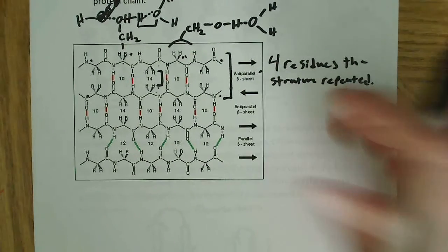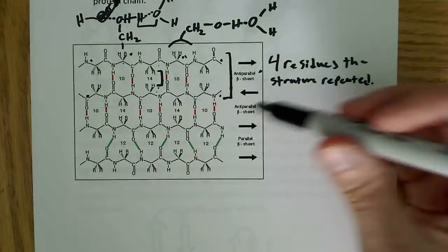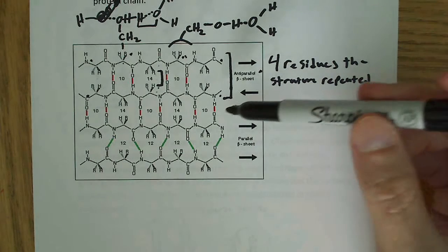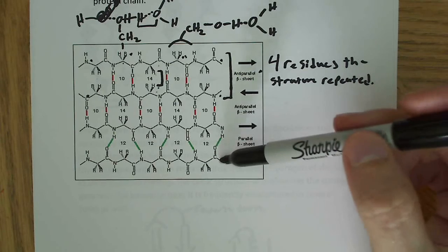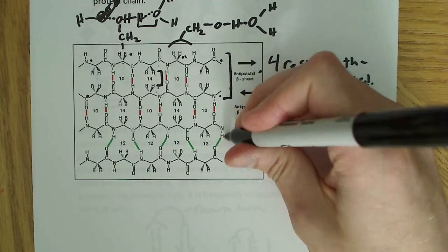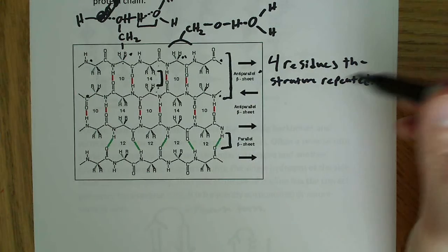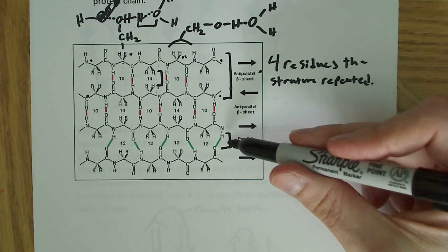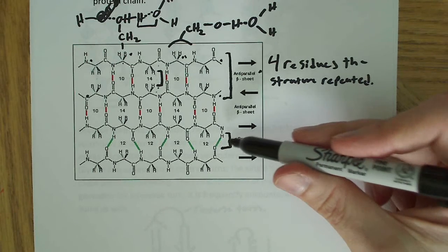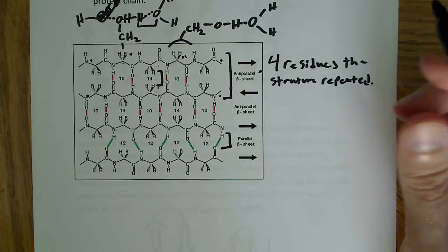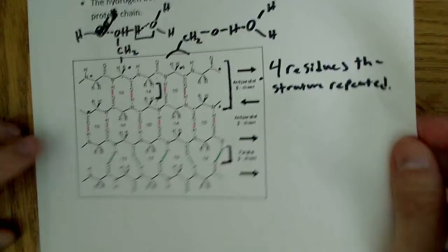As far as the parallel beta sheet goes, the main difference is the direction they run. This is the N-terminus and this is the C-terminus. What I wanted to say about this was the hydrogen bonds. If you notice, these hydrogen bonds are a little offset. This little bit of offset, the way they're offset slightly, makes this less stable than the anti-parallel beta sheet. That's the important point I wanted to make about the beta sheets.